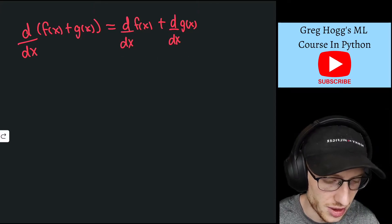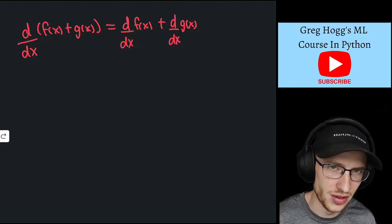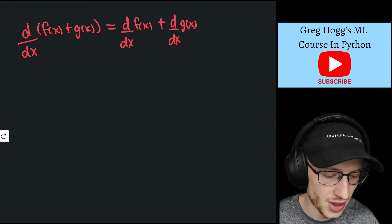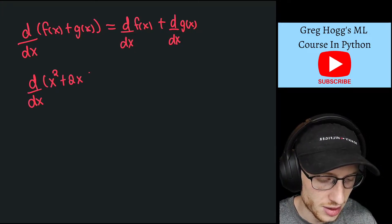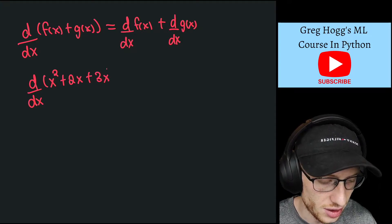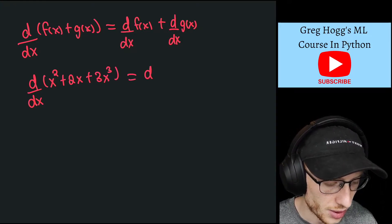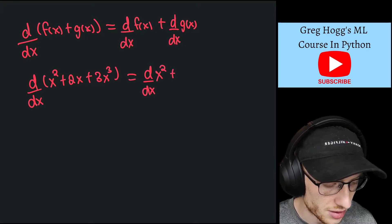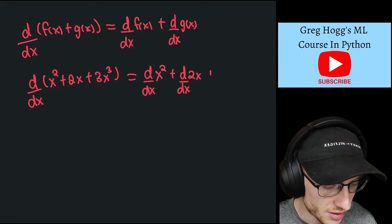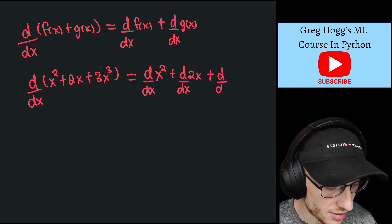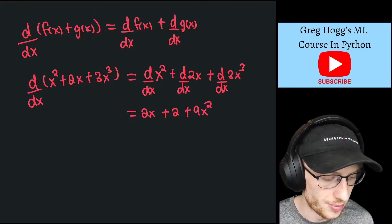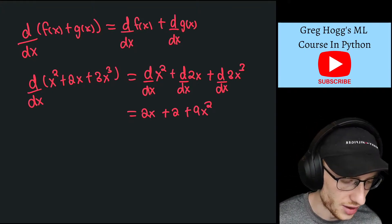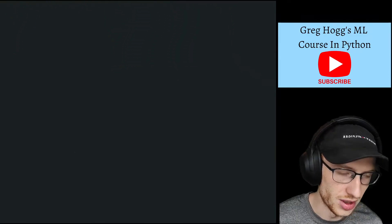Just to show you with an example — and this extends to f(x) + g(x) + h(x), like a big addition — we have d/dx of x² + 2x + 3x³. Well, that is equal to d/dx of x² plus d/dx of 2x plus d/dx of 3x³, and that equals 2x + 2 + 9x². So sorry about that — that's what we needed to do first so that we can do this derivative properly.